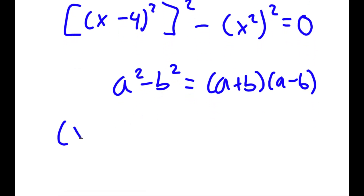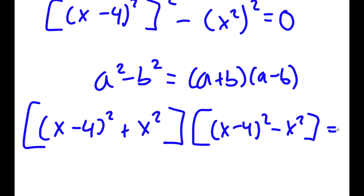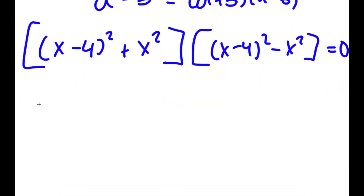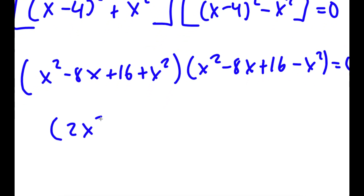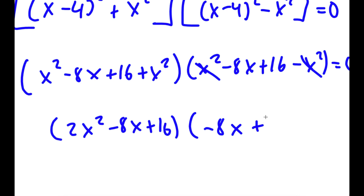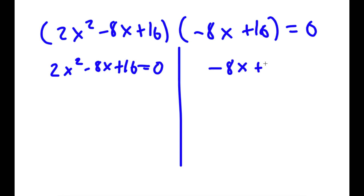So this gives me (x minus 4) squared plus x squared, times (x minus 4) squared minus x squared, equal to 0. Expanding gives 2x squared minus 8x plus 16, times negative 8x plus 16, equal to 0. So now we have two equations: 2x squared minus 8x plus 16 equals 0, and negative 8x plus 16 equals 0.